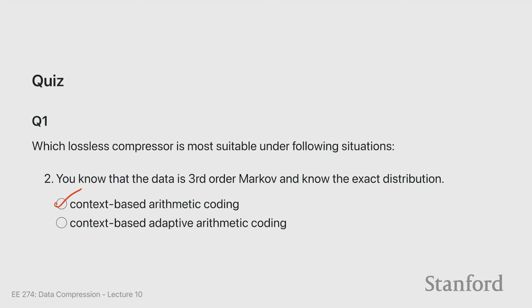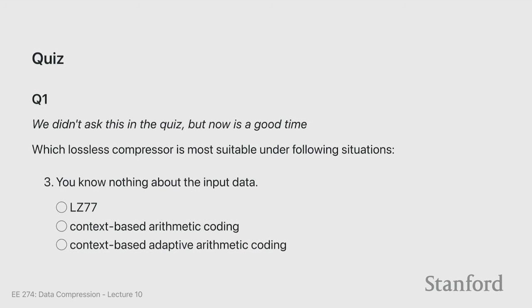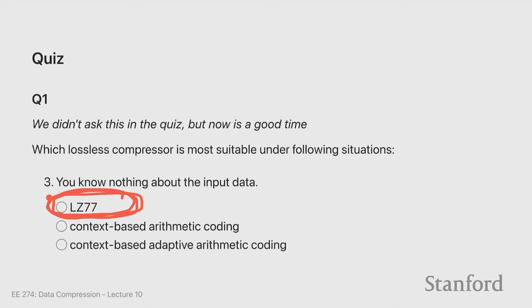There was a third question in the quiz we had to remove because I didn't cover the material in time. It asked: you know nothing about the input data — what would you do? And that is actually today's topic: LZ77, where you don't make any assumptions about your data.